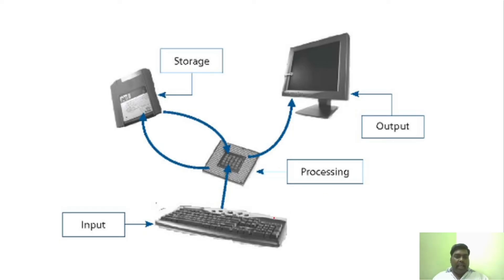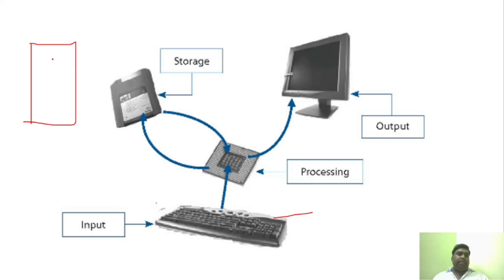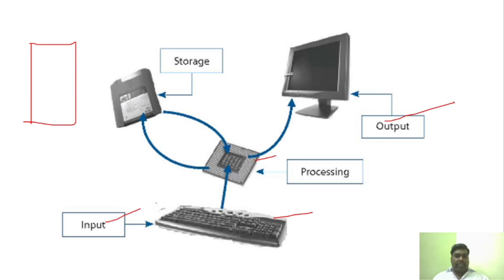The basic elements of the computer include a keyboard, and a processor which is the CPU — also called a server. The CPU will have a motherboard, processor, and all those things. So we have input device, processor, and output device. And inside the processor itself, the CPU will have something called memory for storage.